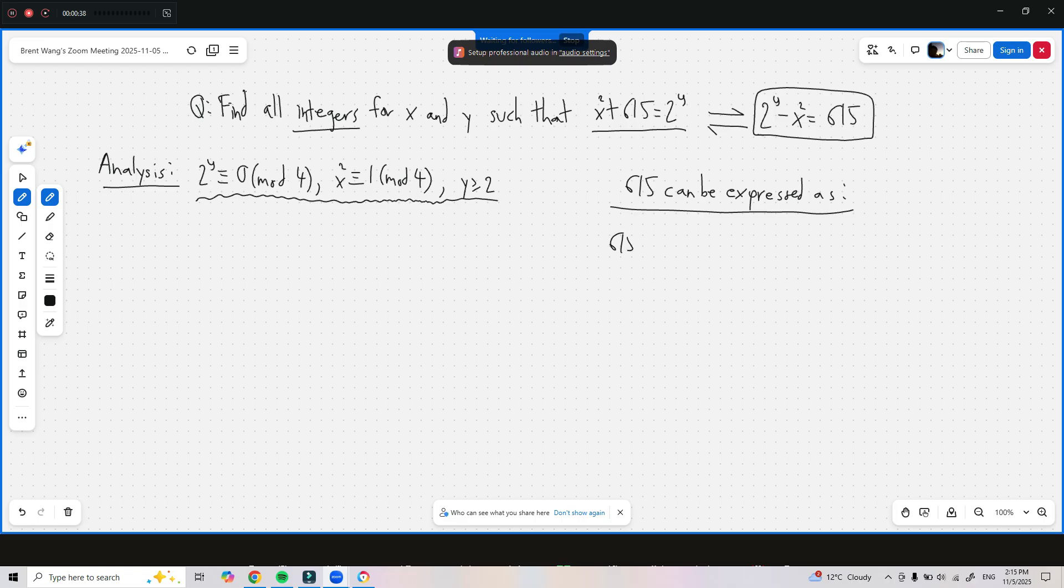615 can equal 1 times 615, which is equal to 308 minus 307 times 308 plus 307, which is equal to 308 squared minus 307 squared.